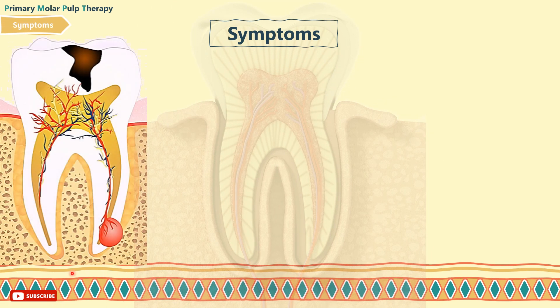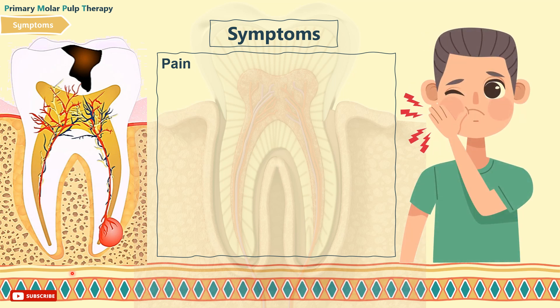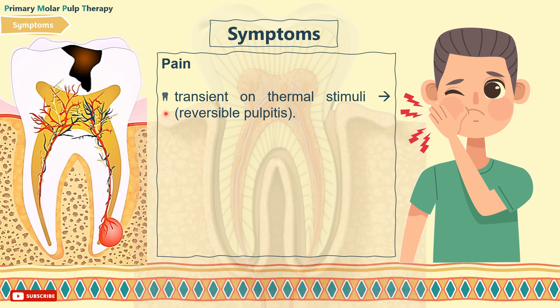Now to the symptoms that the patient might suffer from that indicate the need for pulp therapy. Mainly it is pain, but pain can come in different characteristics. Firstly, transient pain on thermal stimuli — that indicates reversible pulpitis, and in that case you can proceed to pulpotomy if no other contraindication is present.